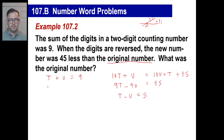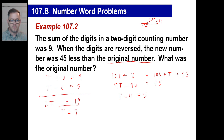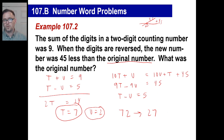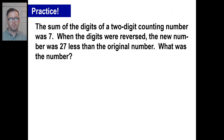Okay, try the practice problem — pause it and see what you get. 'The sum of the digits of a two-digit counting number is seven.' So T plus U equals seven. The digits are reversed and the new number is 27 less than the original. Let's put the original number: that's always 10 times T plus one times U. And the reversed number is of course 10 times U plus one times T.